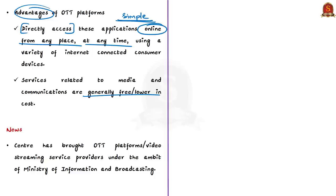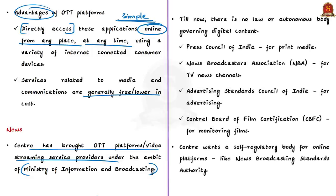The central government has brought OTT platforms and OTT video streaming service providers under the ambit of the Union Ministry of Information and Broadcasting. This order has received presidential signature and brings online films, digital news and current affairs content under the purview of this ministry. Until now, there was no law or autonomous body governing digital content. At present, the Press Council of India looks after print media, the News Broadcasters Association takes care of TV news channels, the Advertising Standards Council of India handles advertising, and the Central Board of Film Certification monitors films. News and entertainment are regulated by the Cable Networks Regulation Act. Online platforms and digital content lacked a proper regulatory architecture.